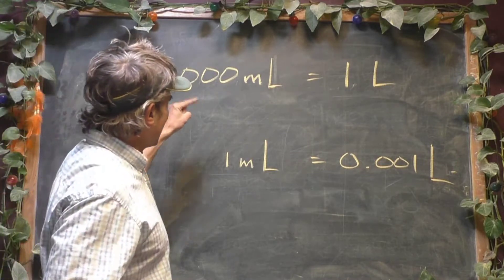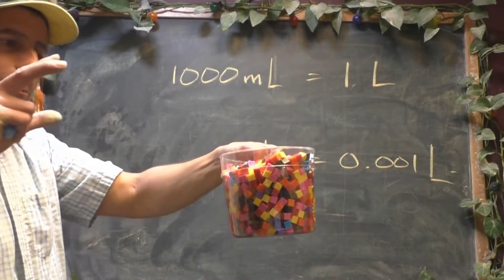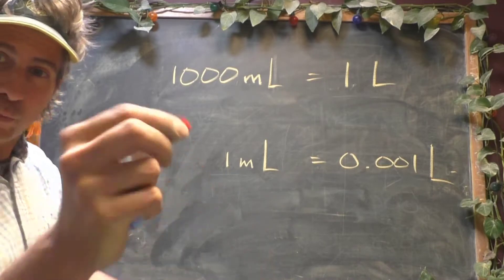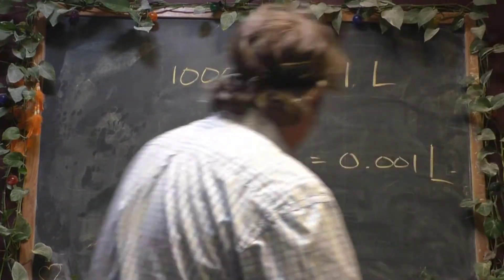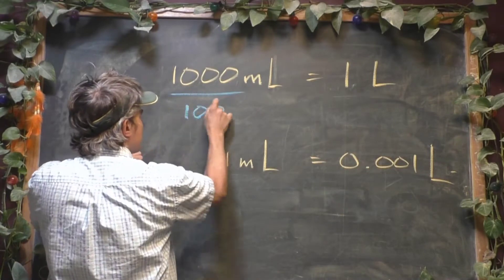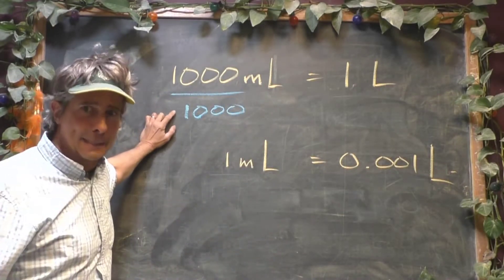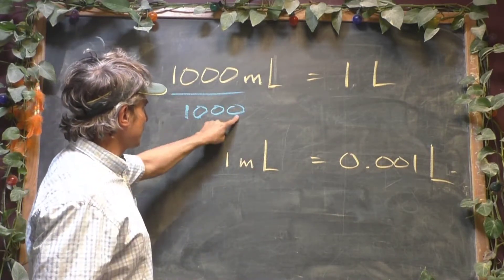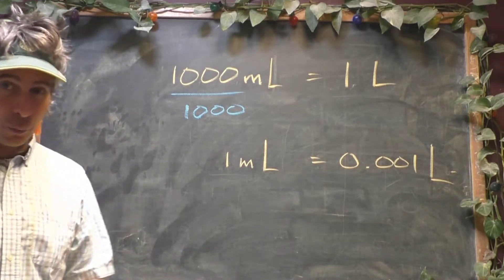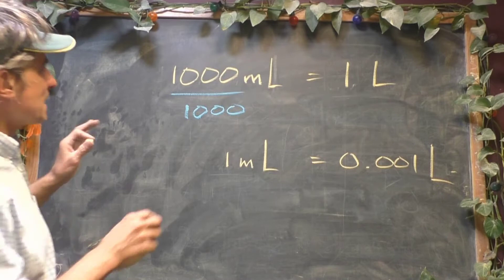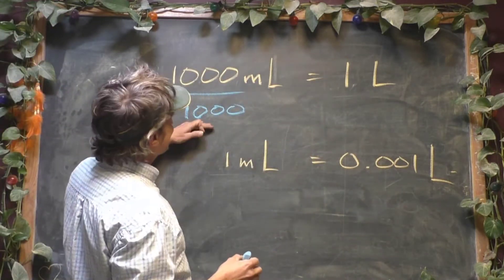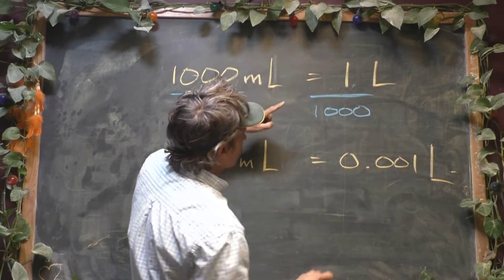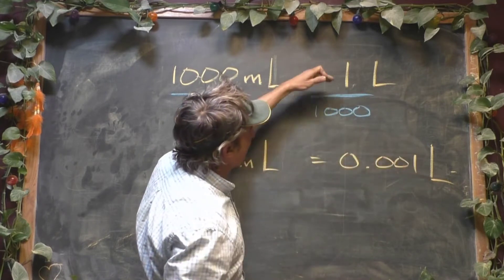What I did was I took the full 1,000 milliliters and broke this into 1,000 parts. So how big would 1,000th of this be? Well, it would be one of those little dudes. So effectively what I did was I divided this quantity into 1,000 equal pieces. The unit is still milliliters. I'm dividing 1,000 by 1,000 and I'm getting 1. Since this equation is true, if I divide this side by 1,000, I should also divide this side by 1,000. So I get the unit being liters and I've got 1,000th.